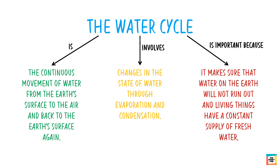The water cycle is important because it makes sure that water on the earth will not run out and living things have a constant supply of fresh water.